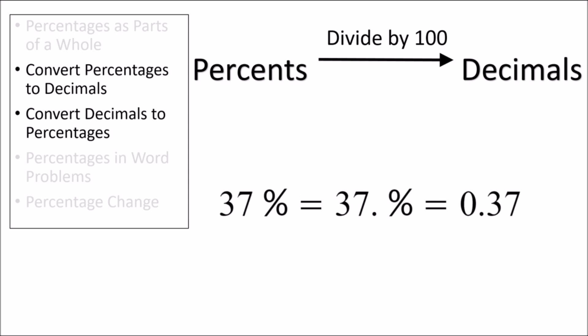So, for example, to convert 37% to a decimal, we move the decimal point to the left two spots to get 0.37. Similarly, we can convert from decimals to percents by doing the opposite, multiplying by 100.